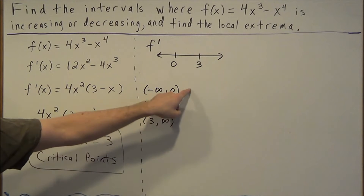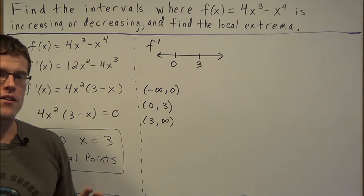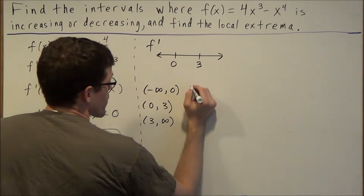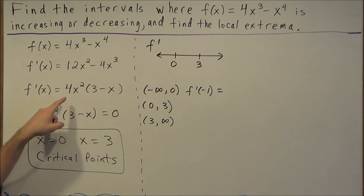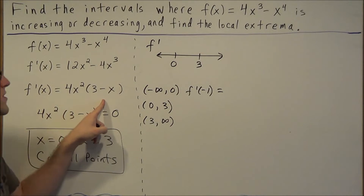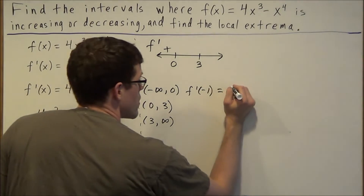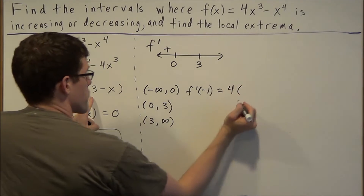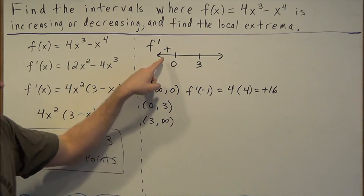We're going to pick a number in each interval, plug it into the first derivative, and record the sign — all we care about is the sign, not the value. For the first interval we pick negative one: four times negative one squared is positive, three minus negative one is positive, and a positive times a positive is positive, giving us positive 16. We record the positive sign in that interval.